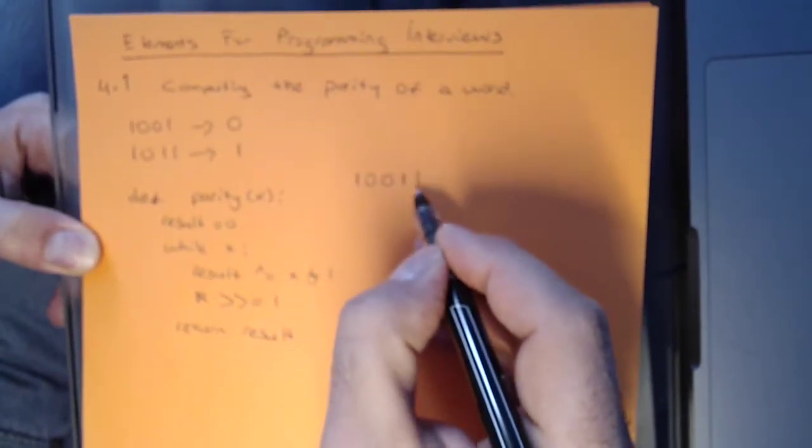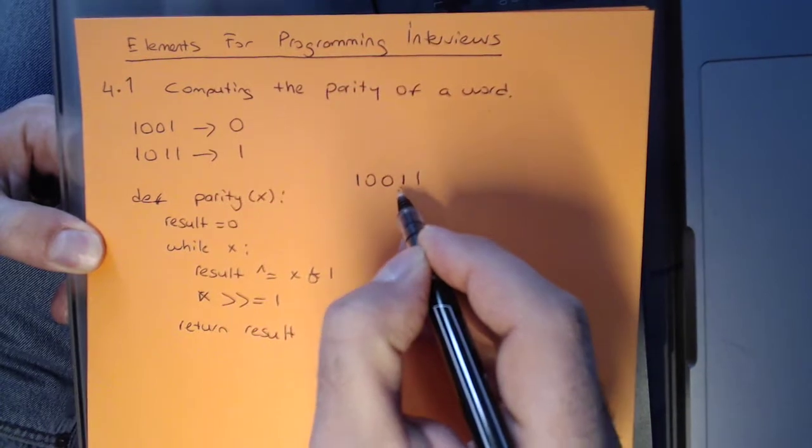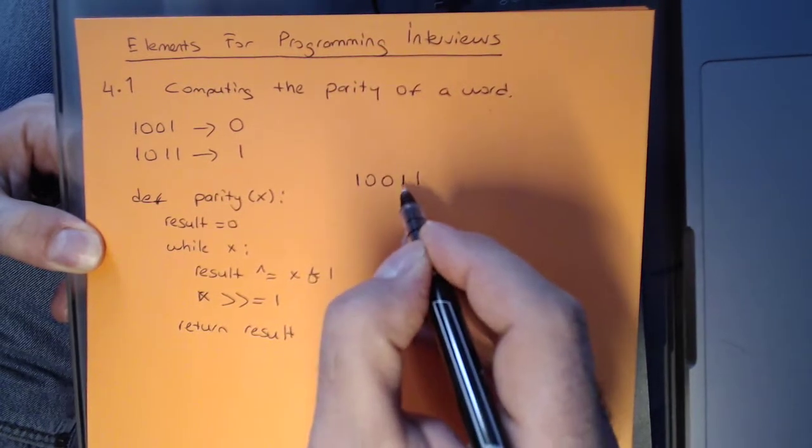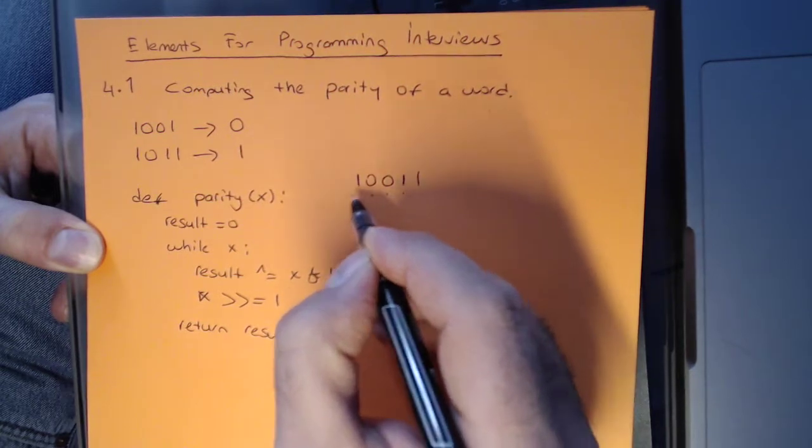We're going to take a look at this particular bit, then right-shift by 1, and then we're going to look at this bit, this bit, this bit, and this bit.